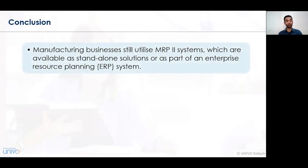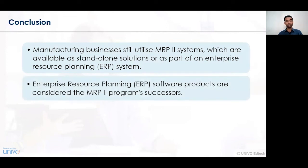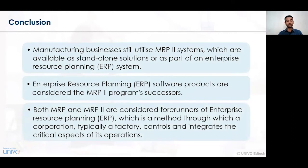From this session, we understand that MRP — manufacturing resource planning — is an extension of MRP1, which is material requirement planning. It is also a standalone solution for ERP software that can be implemented in organizations. Initially we had ERP, then an advanced level MRP1, and then the more advanced MRP2. ERP is a successor or predecessor of MRP2 as part of a certain software, and both MRP and MRP2 are considered forerunners of ERP software.